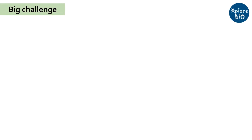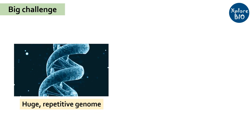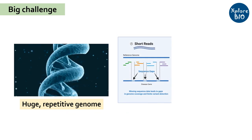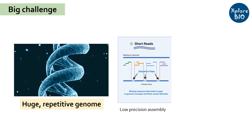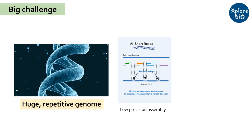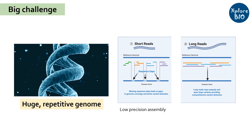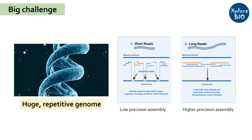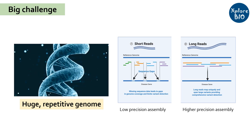Now let's see what is the major challenge with Pan Genome sequencing. Eukaryotic genomes are huge and comprise a large portion of repetitive DNA. Short read sequencing methods pose a big challenge in accurate assembly of genomes. But recently, with the improvement of next generation sequencing technologies, sequencing longer reads with higher accuracy is facilitating the assembly of multiple genomes with higher precision, and soon we will see more and more Pan Genomes being published for several more species.